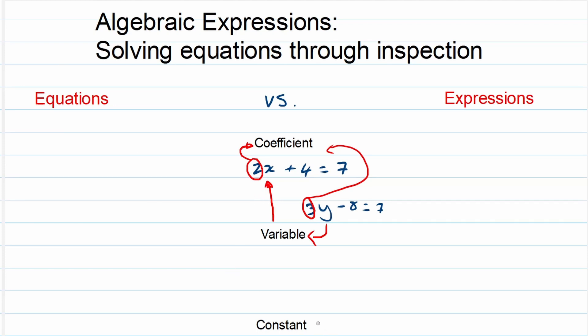And thirdly a constant. The constant is a number that does not have a variable next to it. Like the negative 8, like the 7, like the 4, and the 7 as well with the equation at the top. So coefficients, variables and constants. Those are the three terminologies we need to know.